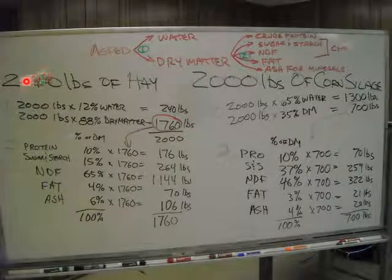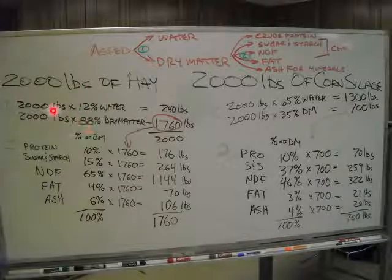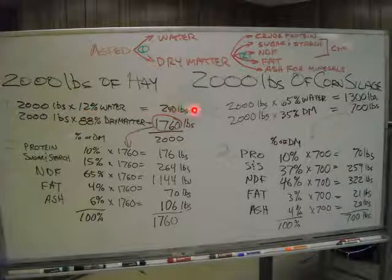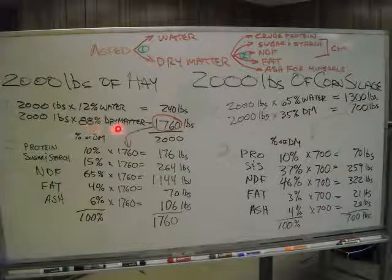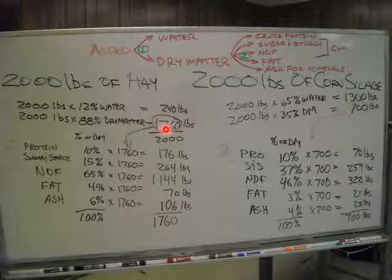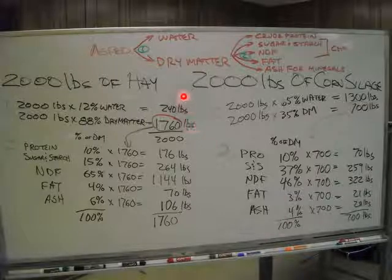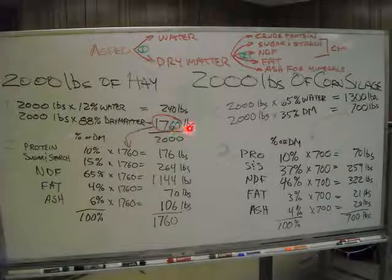Step one: we take 2,000 pounds of hay. We know it's 12% water and 88% dry matter. 2,000 times 12% gives us 240 pounds of water in that pile. That same 2,000 pounds multiplied by the dry matter percentage of 88% gives us 1,760 pounds of dry matter in that one ton of hay. We can check our math: 240 plus 1,760 should add up to the original 2,000.